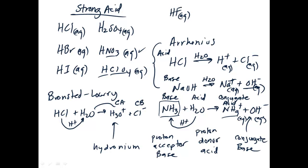If you take a substance and add a hydrogen ion to it, that substance is called a conjugate acid. Both with Arrhenius and Brønsted-Lowry definitions, a strong acid is one that goes essentially 100% to completion — to three significant figures, it goes 100% to the right. So these six strong acids in water go 100% ionized to a hydrogen ion and the conjugate base.